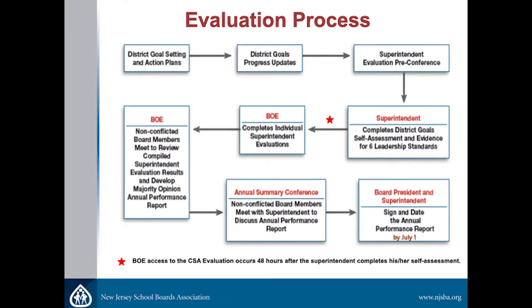The process starts with the district goals — we saw in statute that that is part of the requirements. When a board sits down with the superintendent to set those goals, about three to five goals is ideal. Much more than that, we don't want to be sending the district in too many different directions. We want to focus on three or four things that we think are so important to move the district forward that we're going to hold the superintendent accountable by putting them in her evaluation.